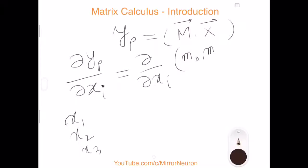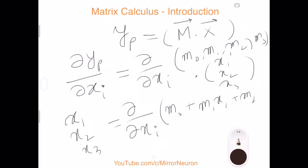This becomes the derivative with respect to xi: m0, m1, m2, m3 dot product with x1, x2, x3, and we have a 1 there. So the derivative with respect to i becomes m0 plus m1*x1 plus m2*x2 plus m3*x3. Now xi can take any value.